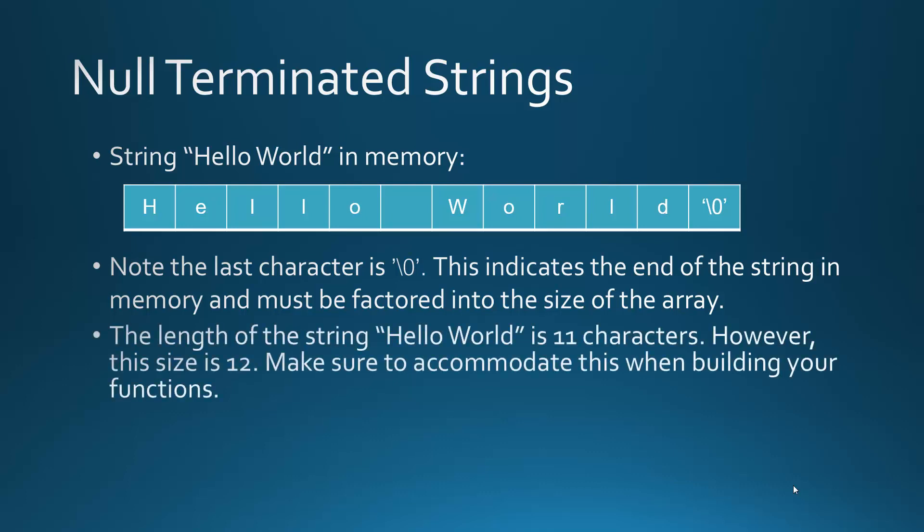The length of the string 'hello world' is 11 characters. However, the size of the array is 12 because of that null termination character. When you're building functions that iterate over strings, you need to take into account that null termination character, especially if you're looping from the back end of the string. If you wanted the last character in a string generically, that would be not the size of the array minus 1, but the size of the array minus 2.